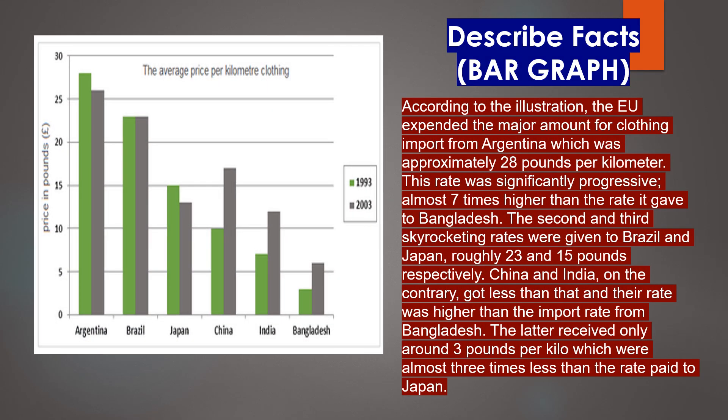According to the illustration, the EU expended the major amount for clothing import from Argentina, which was approximately 28 pounds per kilogram. This rate was significantly higher — almost seven times higher than the rate it gave to Bangladesh. The second and third highest rates were given to Brazil and Japan, roughly 23 and 15 pounds respectively. China and India, on the contrary, got less than that, but their rate was higher than the import rate from Bangladesh, which received only around three pounds per kilo — almost three times less than the rate paid to Japan.